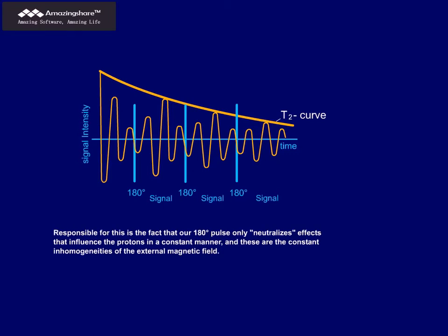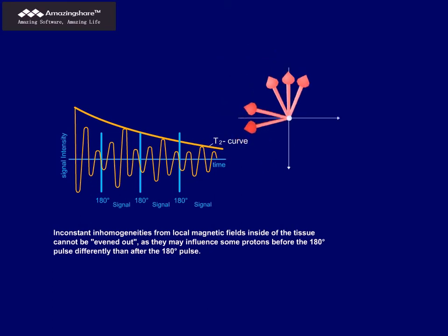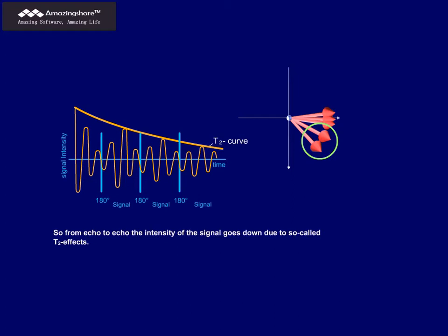Responsible for this is the fact that our 180-degree pulse only neutralizes effects that influence the protons in a constant manner, and these are the constant inhomogeneities of the external magnetic field. Inconstant inhomogeneities from local magnetic fields inside of the tissue cannot be evened out, as they may influence some protons before the 180-degree pulse differently than after the 180-degree pulse. So, some of the protons may still be behind, or in front of the majority of the protons that will reach the starting line at the same time. So, from echo to echo, the intensity of the signal goes down, due to so-called T2 effects.